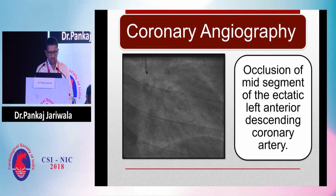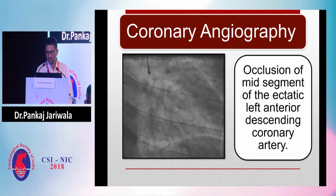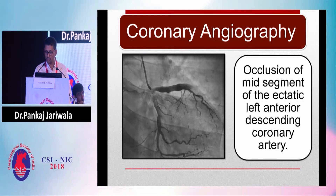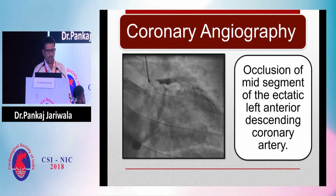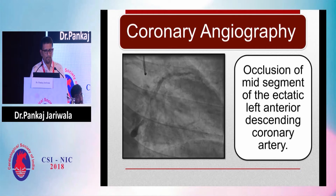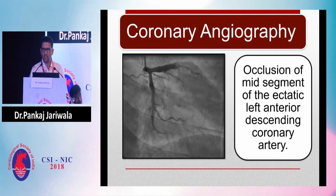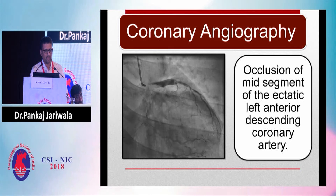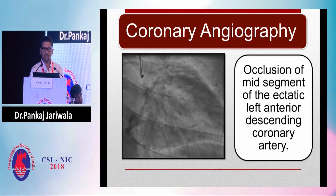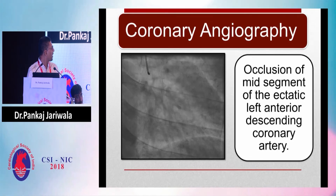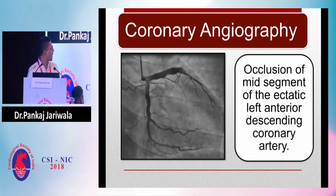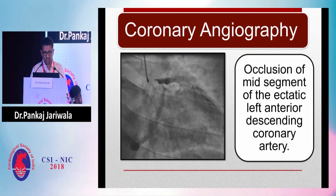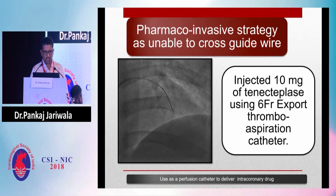The patient was a smoker and also chewing gutka, so the large amount of tobacco intake must have made his artery very ectatic. There was a large ectasia of the vessel, and contrast could be seen stagnating. Performing primary angioplasty in such an ectatic coronary artery is really challenging.